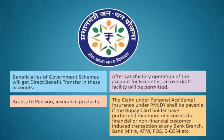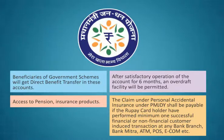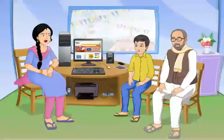Access to pension and insurance products is also available. The claim under personal accidental insurance under PMJDY shall be payable if the RuPay card holder has performed minimum one successful financial or non-financial customer-induced transaction at any bank branch, bank mitra, ATM, POS, e-com, etc.